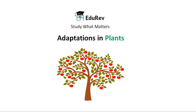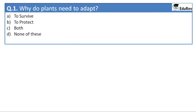Let's begin with the first question: why do plants need to adapt? The options are: to survive, to protect, both, or none of them. The correct answer is option A — to survive.